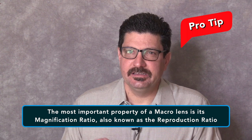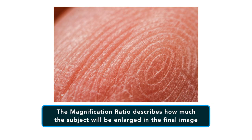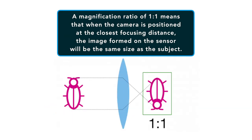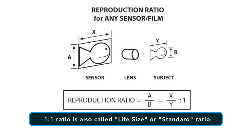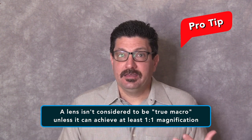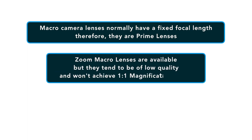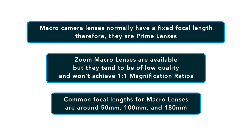The most important property of a macro lens is its magnification ratio, also known as the reproduction ratio. This describes how much of the image will be enlarged in the final image that you create. A magnification ratio of 1 to 1 means that when the camera is positioned at the closest focusing distance, the image formed on the sensor will be the same size as the subject. For this reason, a 1 to 1 ratio is called life-size or standard ratio. A lens isn't considered to be true macro unless it can achieve at least a 1 to 1 magnification. Macro camera lenses normally have a fixed focal length — they are prime lenses. There are a few zoom macro lenses available but they tend to be of low quality and won't achieve such high magnification ratios as prime macro lenses. Most common focal lengths are around 50 millimeters, sometimes 100 or even 180 millimeters, although the exact value will vary based on each manufacturer.